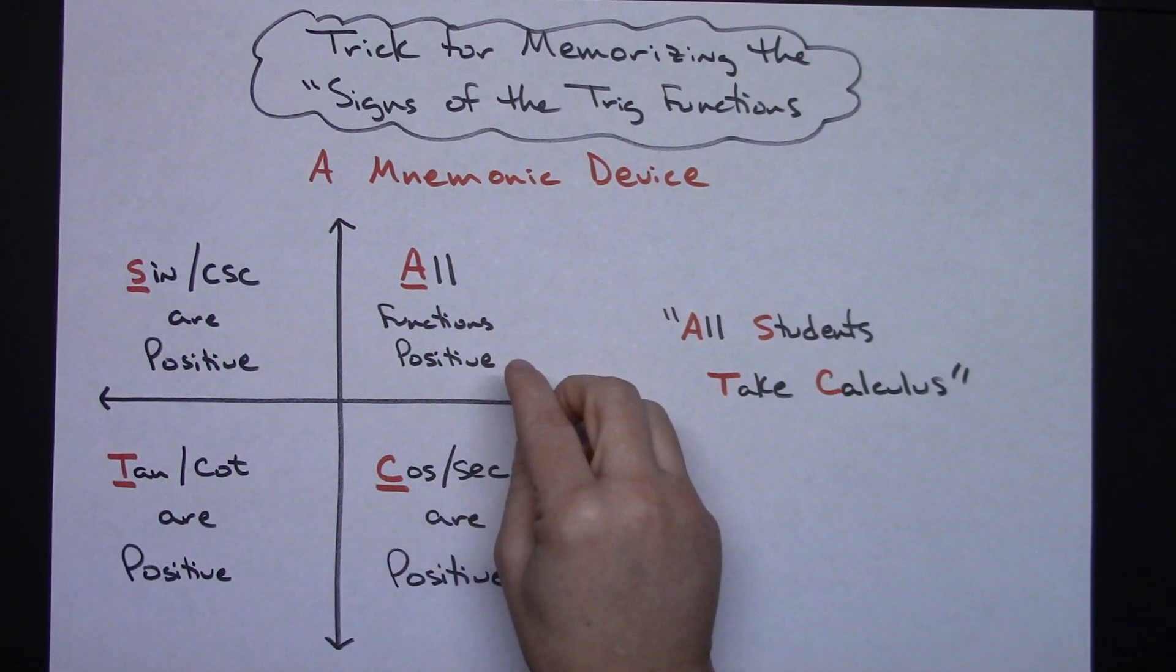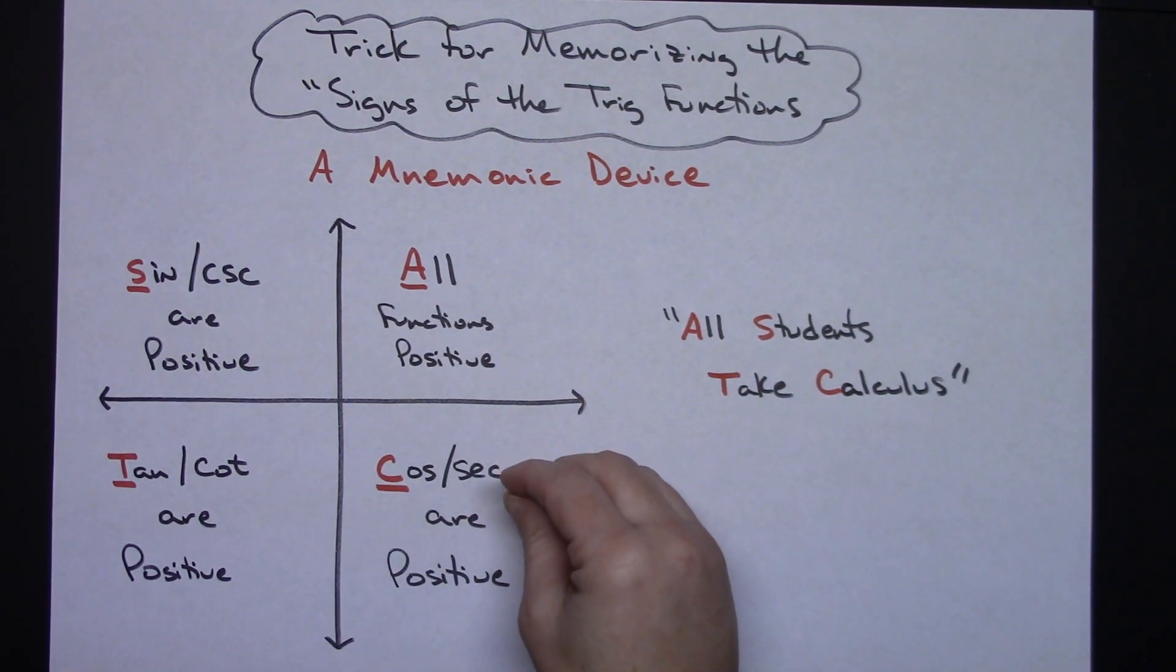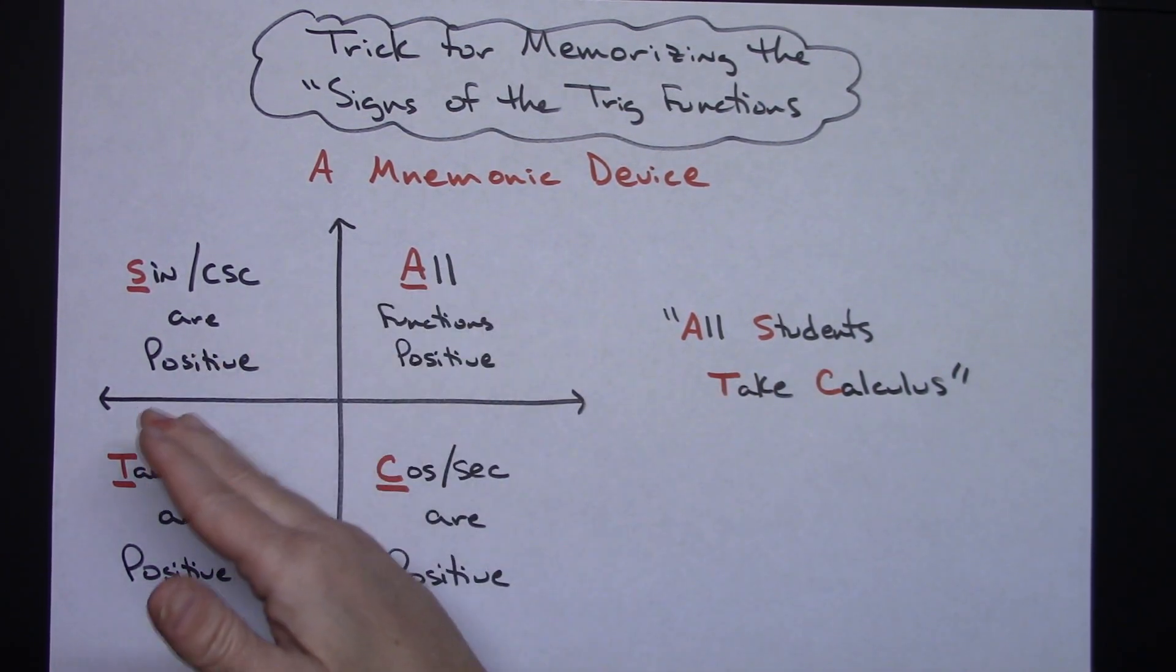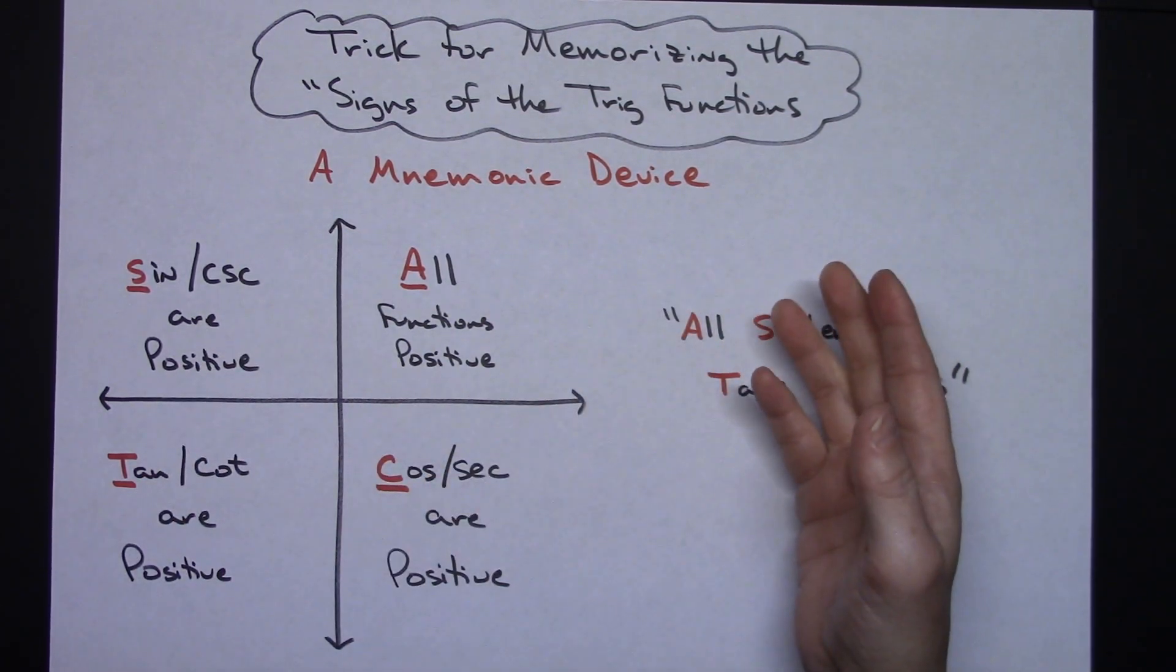We are only going to use this mnemonic device to memorize where the trig functions are positive because obviously if these are the only two that are positive in the second quadrant, then that would mean all the other ones have to be negative.